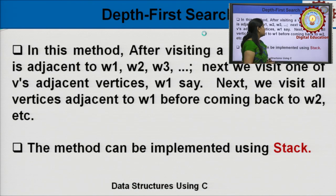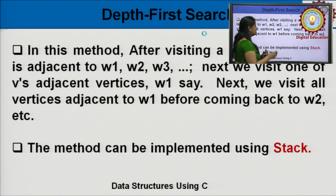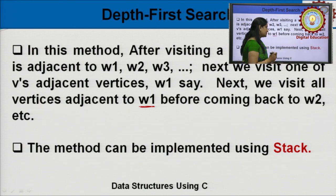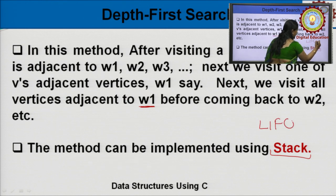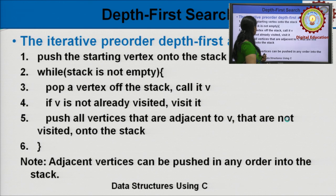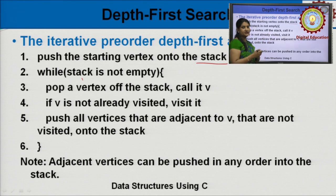Now, depth-first search. In this method, after visiting a vertex V which is adjacent to W1, W2, W3, next we visit one adjacent node like W1 and then visit all adjacent vertices of W1, then back to W2. DFS uses a stack data structure, meaning it follows LIFO strategy — last in, first out. In this procedure, push the starting vertex onto the stack. When the stack is not empty, pop a vertex from the stack, visit node V, and push all adjacent vertices that are not yet visited onto the stack.